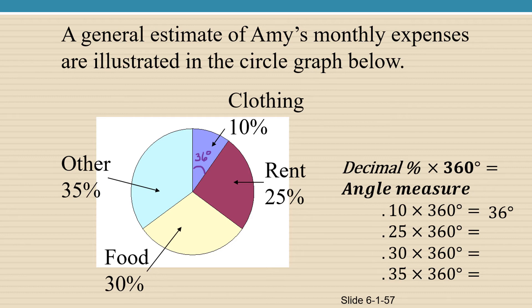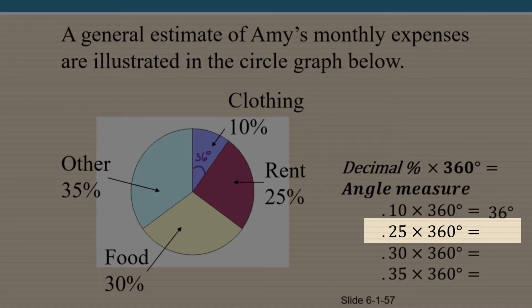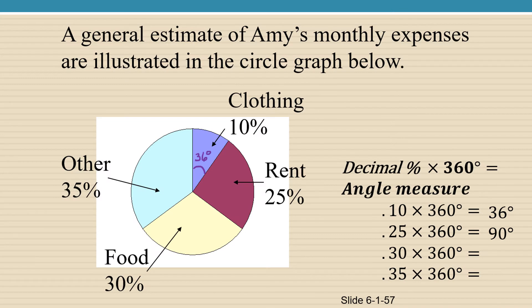Next, we'll look at the rent. Rent is 25%, or 0.25 times 360, which is going to give us 90 degrees.